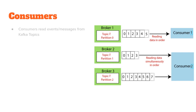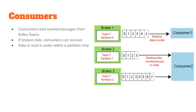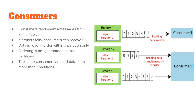A few points about consumers: consumers read events or messages from Kafka topics. Like producers, if the broker a consumer was communicating with fails, consumers can recover — that mechanism is inbuilt. Data ordering is guaranteed only within a partition and not across partitions. Also, the same consumer can read data from more than one partition. For example, consumer 1 consumes only from partition 0 of topic T, while consumer 2 reads simultaneously from partition 1 and partition 2.